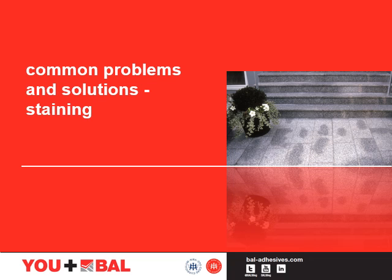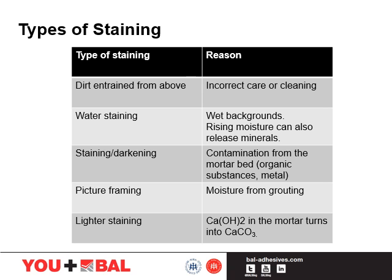We'll now look at the risk of staining, which is a common issue with natural stone installations whilst in use. It's important to focus on the solutions available to prevent it from happening. Dirt trapped in the surface of the stone if not removed can become stubborn and may require specialist cleaning materials. Similarly, the use of high pressure cleaners including steam mops can also cause the tile or slab to discolor. Light coloured absorbent stone can be stained or darkened by bedding or jointing material. Some very absorbent stones may be susceptible to drawing in residual moisture from the tile adhesive, creating either moisture staining or minerals becoming released in the stone by rising moisture from the adhesive or screed beneath the tile or from the grout joints.